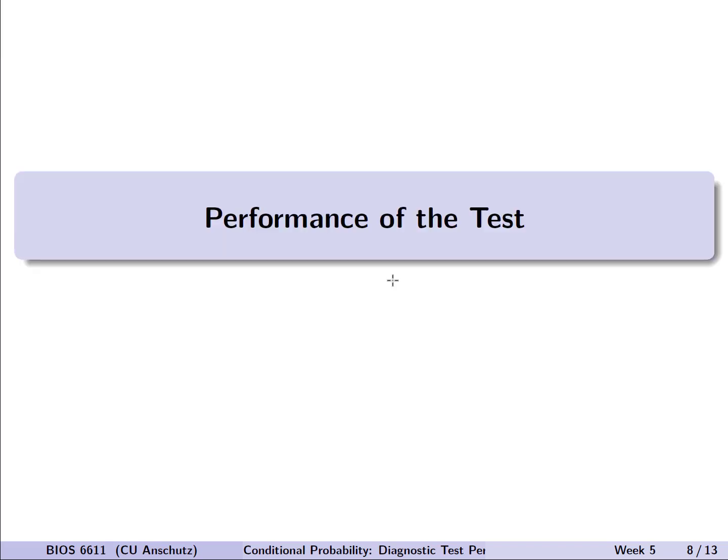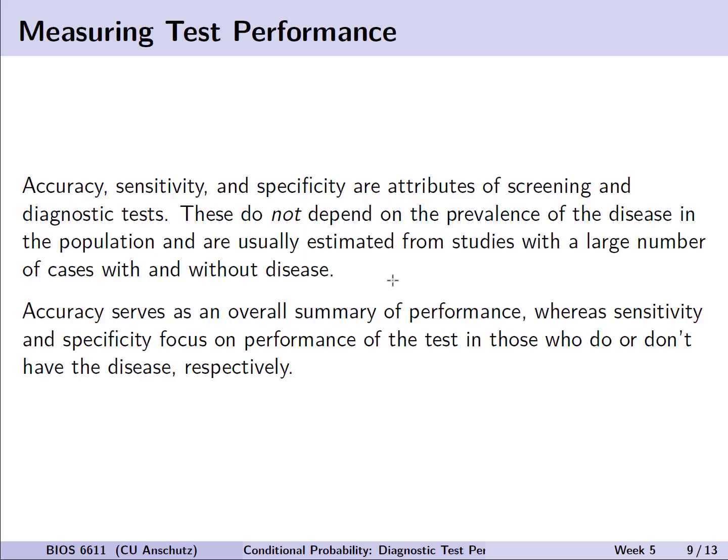So let's briefly talk about the performance of the diagnostic test itself. How do we measure test performance? There are three major attributes we use to describe how well a test does. Its accuracy, sensitivity, and specificity. These are all attributes of screening and diagnostic tests that we can describe. One important feature here is that these do not depend on the prevalence of the disease in our population, and will frequently be estimated from studies that have a large number of cases with and without the disease, or potentially in our case here, designed in a way that we ensure we have at least some number of cases relative to some number of controls to see how it performs. Accuracy serves as an overall summary of performance, as we'll see on the following slide, whereas sensitivity and specificity will focus on the performance of the test in those who do or don't actually have the disease, respectively.